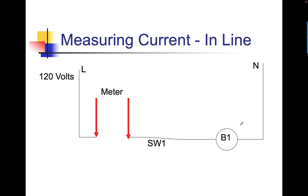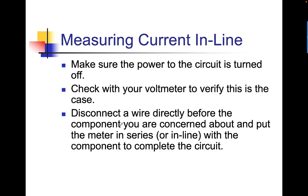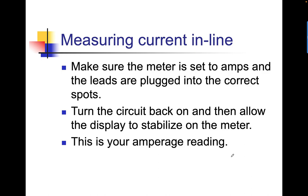To put your meter in line, put the meter in series with the circuit. You're going to break the circuit, insert your meter, and reconnect — so the current will flow through the meter as part of the circuit. Make sure the power to the circuit is turned off. Check with your voltmeter to verify this. Disconnect a wire directly before the component you're concerned about and put your meter in series with the component to complete the circuit. Make sure the meter is set to amps and the leads are plugged into the correct spots. Turn the circuit back on, allow the display to stabilize, and this is your amperage reading.